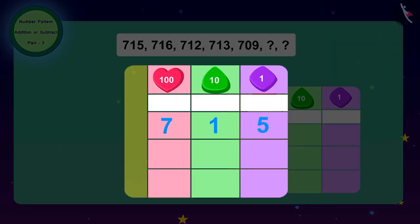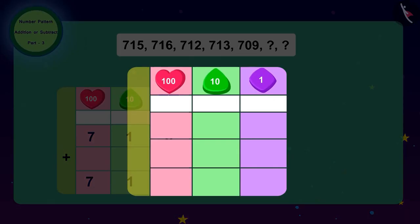What do we have to do to go from 715 to 716? We will have to add one. And what do we have to do to go from 716 to 712? We will have to subtract four. Absolutely correct!